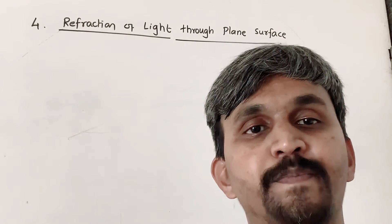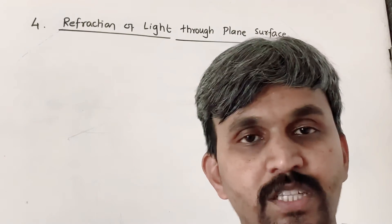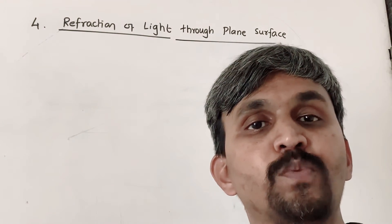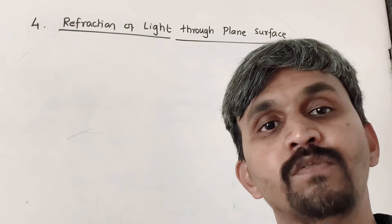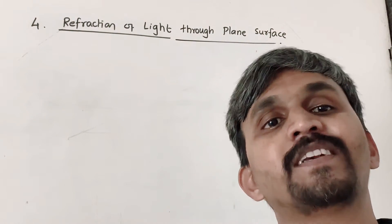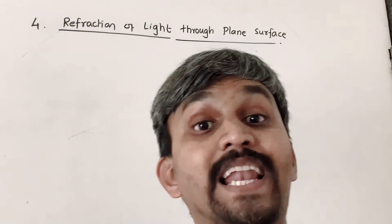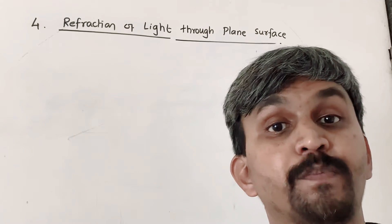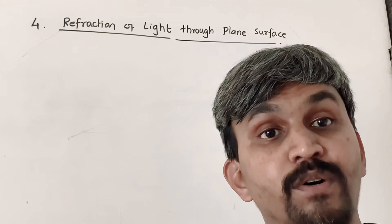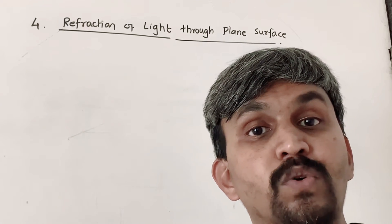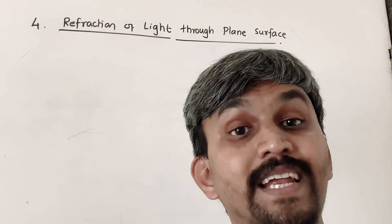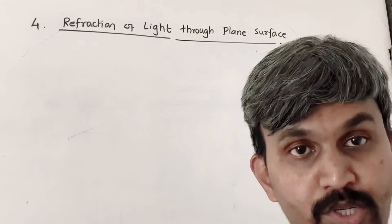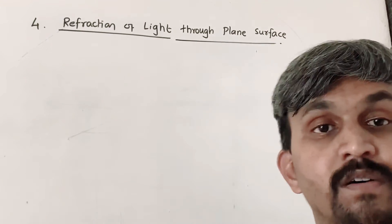Hi friends, this is Professor Prashant. Today we will start with the fourth chapter, that is refraction of light through plane surface. In this chapter we are dealing with what is light. Light is a form of energy which is propagated in the form of transverse electromagnetic waves. Since they are electromagnetic, they do not require a medium for propagation.